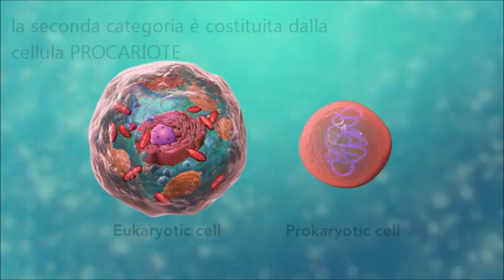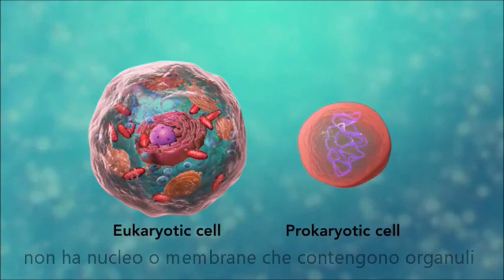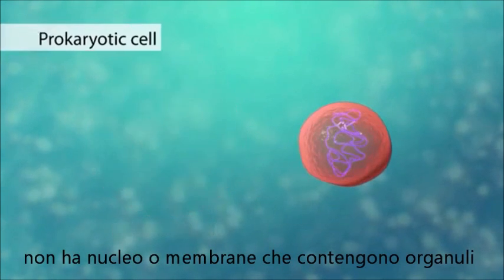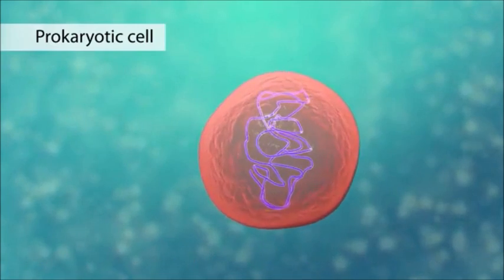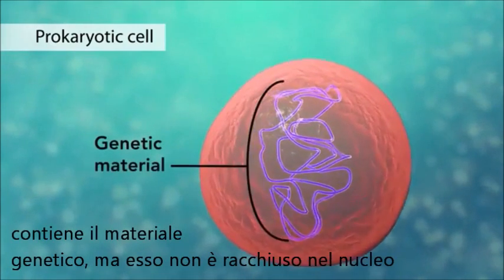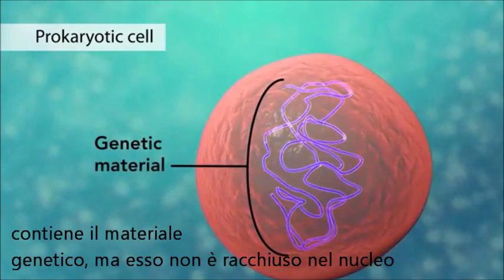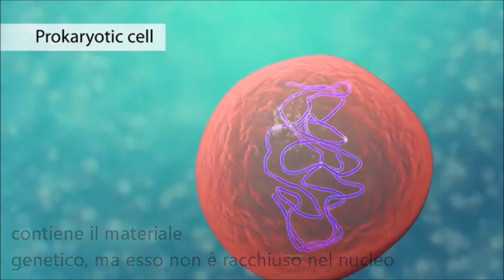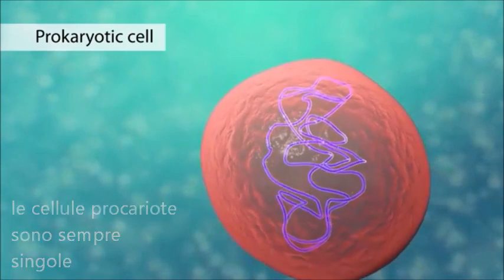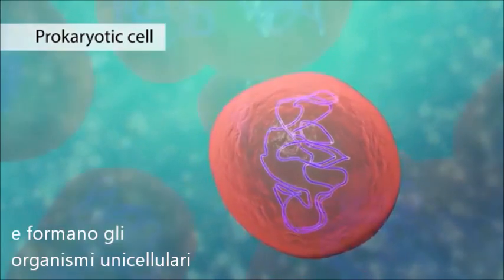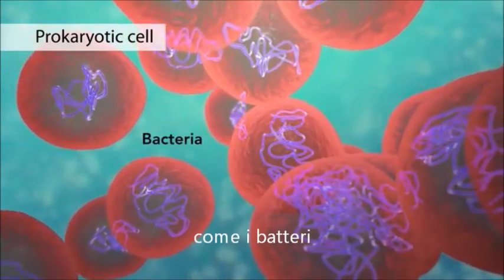The second category is prokaryotic cells. They don't have a nucleus or membrane-enclosed organelles. They do have genetic material but it's not contained within a nucleus. Prokaryotic cells are always one-celled or unicellular organisms such as bacteria.